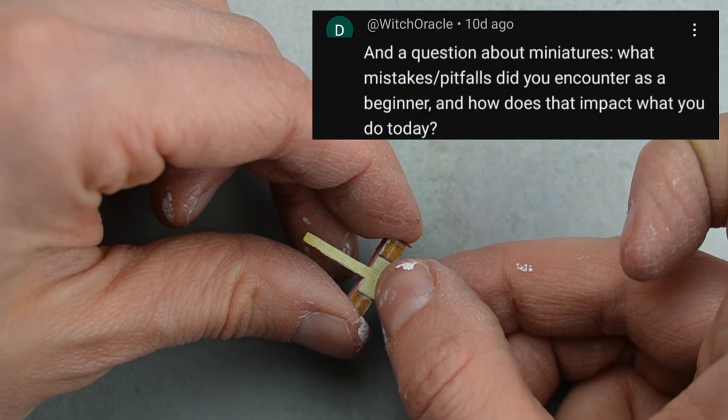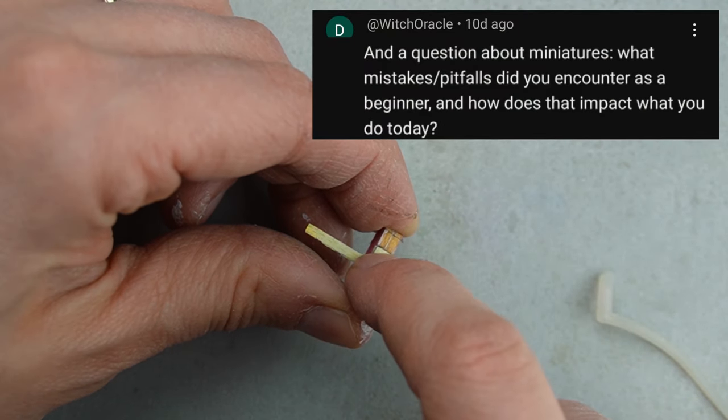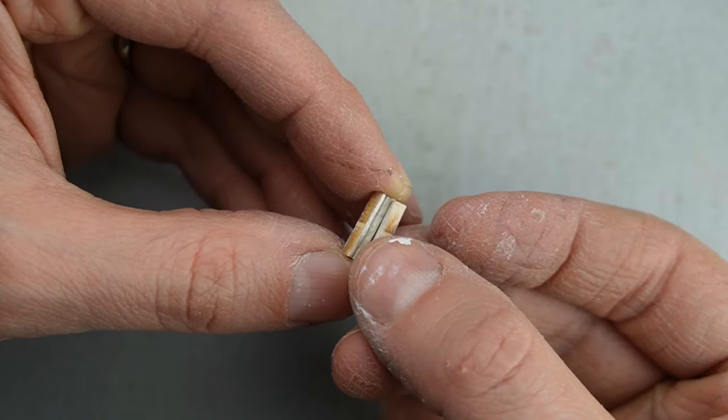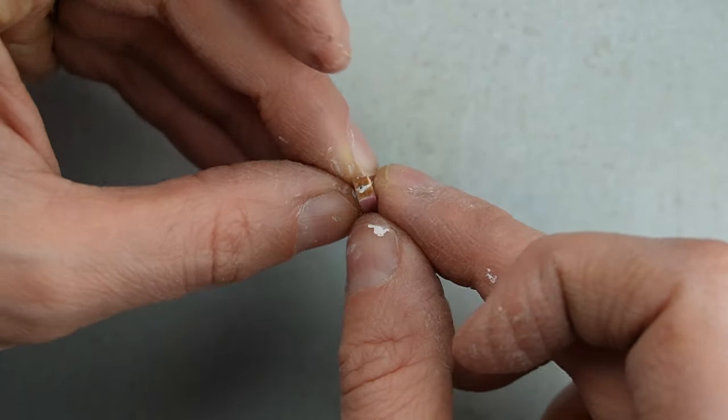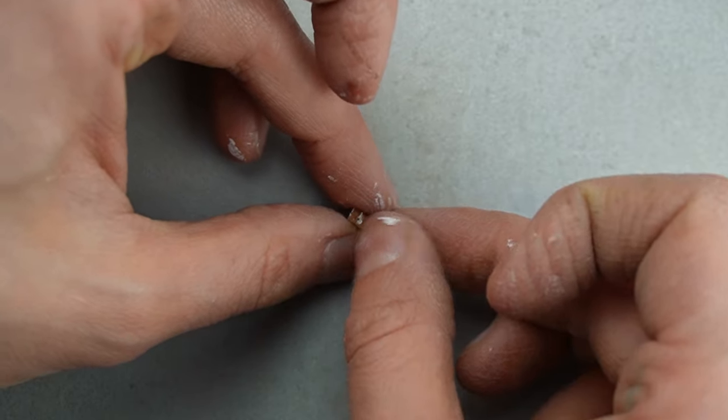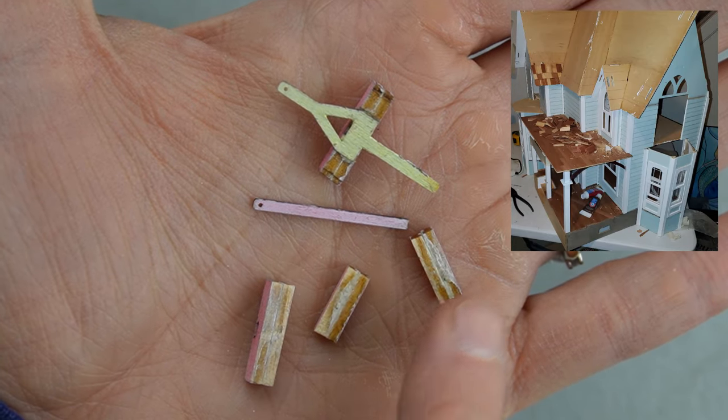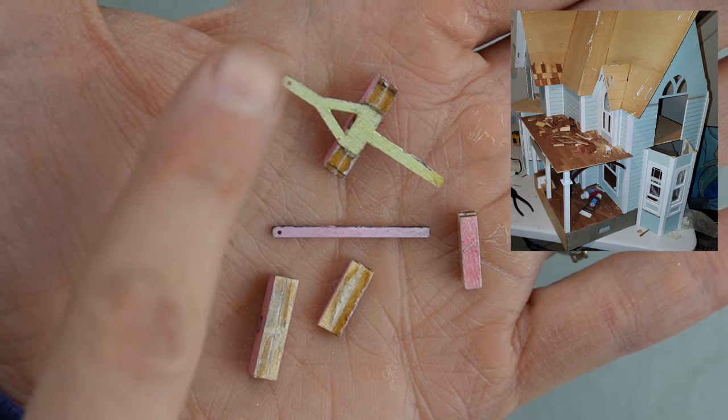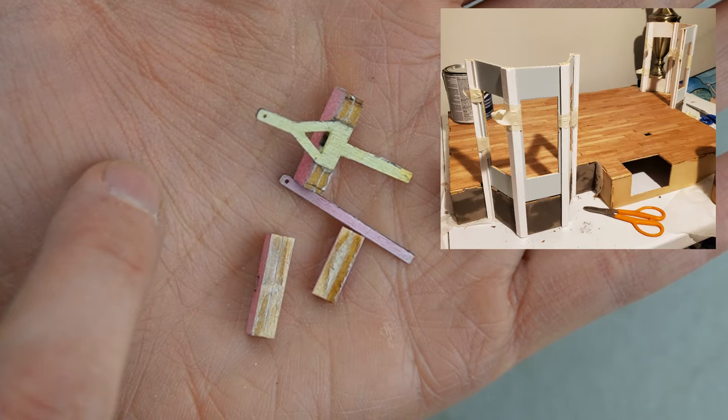What are some mistakes I made as a beginner, and how does that impact what I do today? As a beginner, I was very concerned about making the right decisions. When it came to the miniature dollhouse kit my friend gave me, I had assembled and painted the entire dollhouse. I laid all of the flooring, one strip at a time, and all of the shingles.